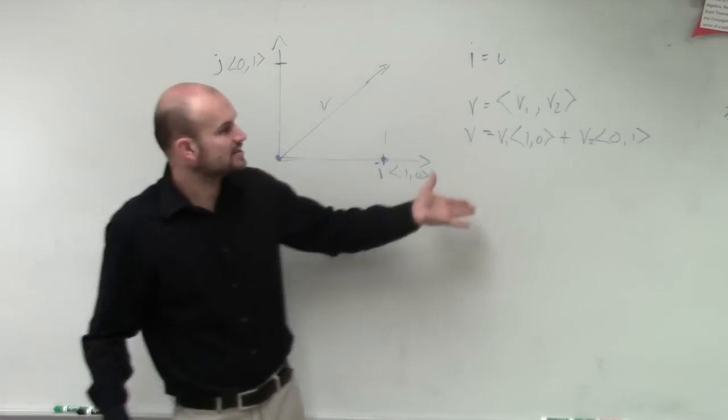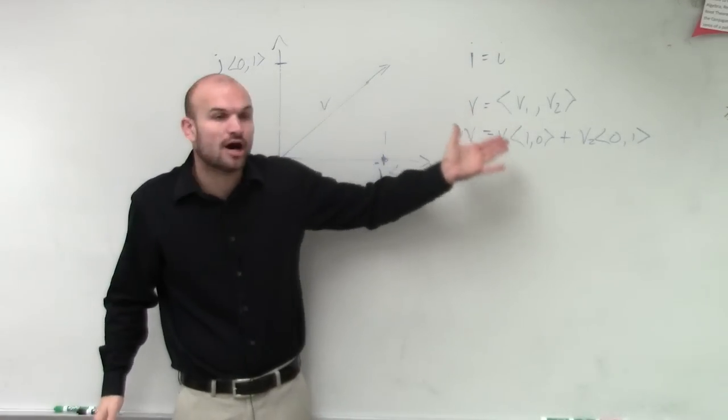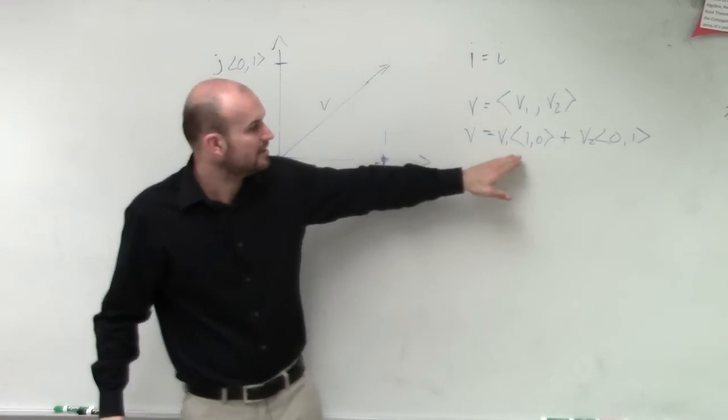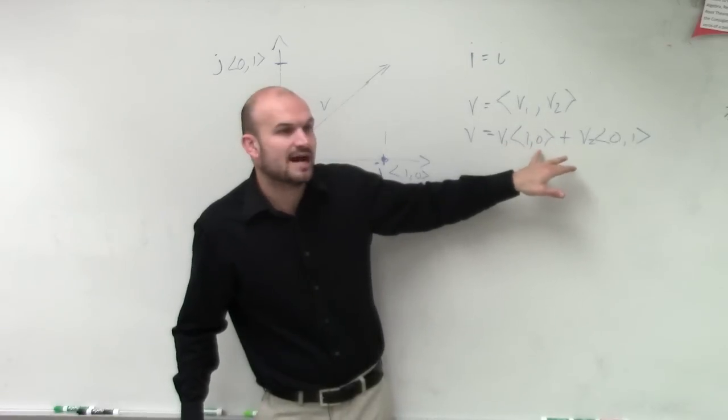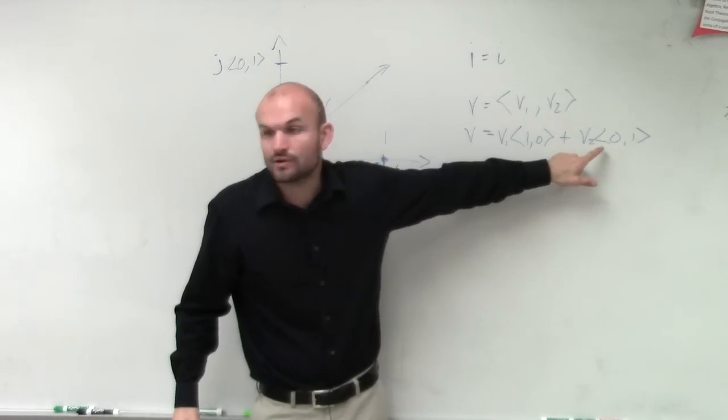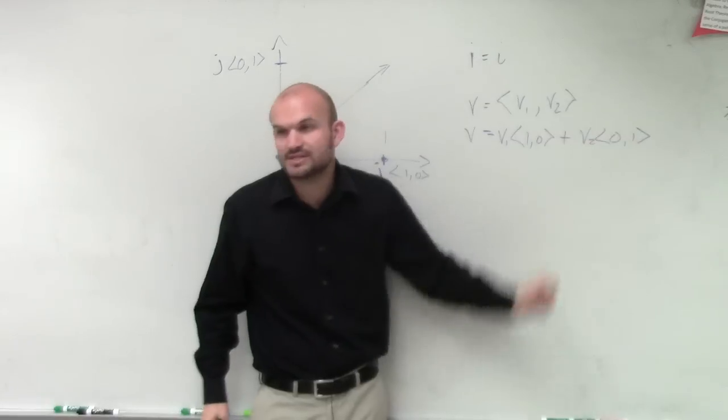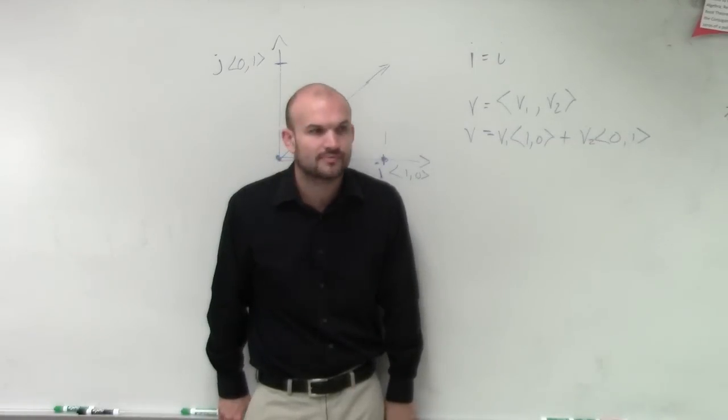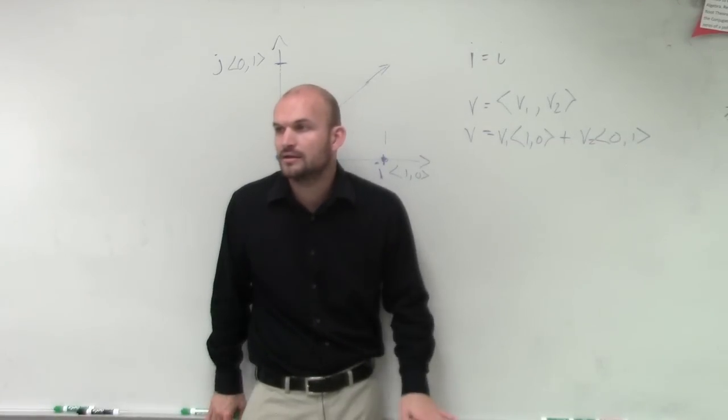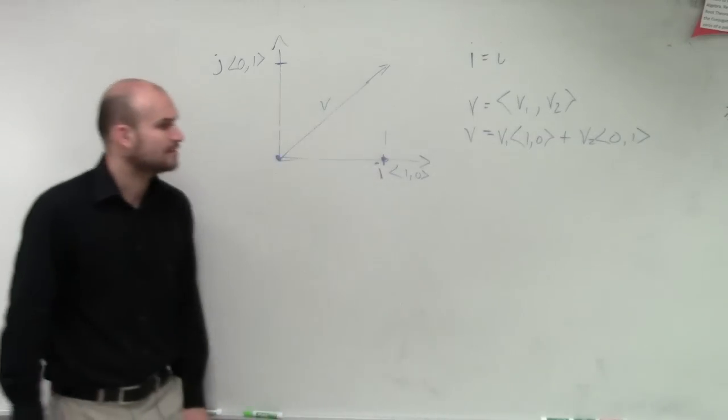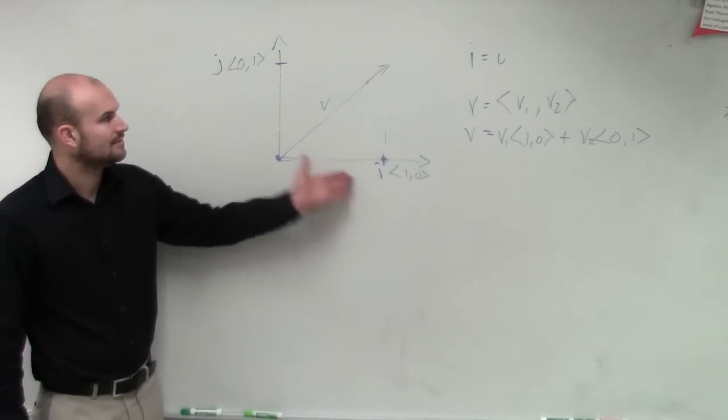So I want you guys to understand is a vector can always be written in your form of v1 times your vector coordinate 1 comma 0 plus v2 times your vector coordinate 0 comma 1. But was there another way to rewrite 1 comma 0 and 0 comma 1, those vectors? We can rewrite them as what? Sorry, I'm in the way. I and j.